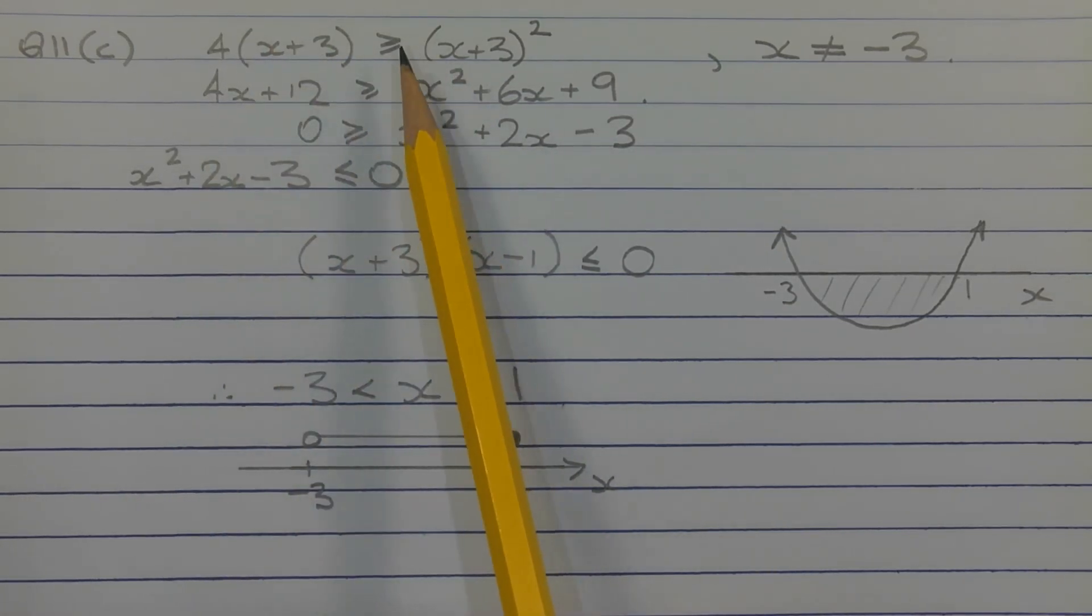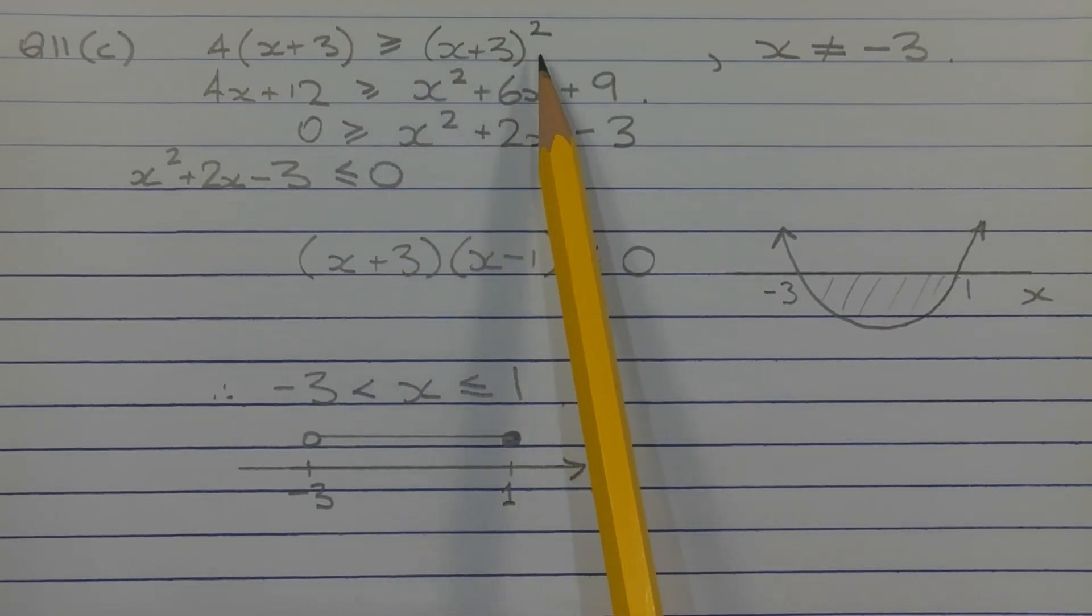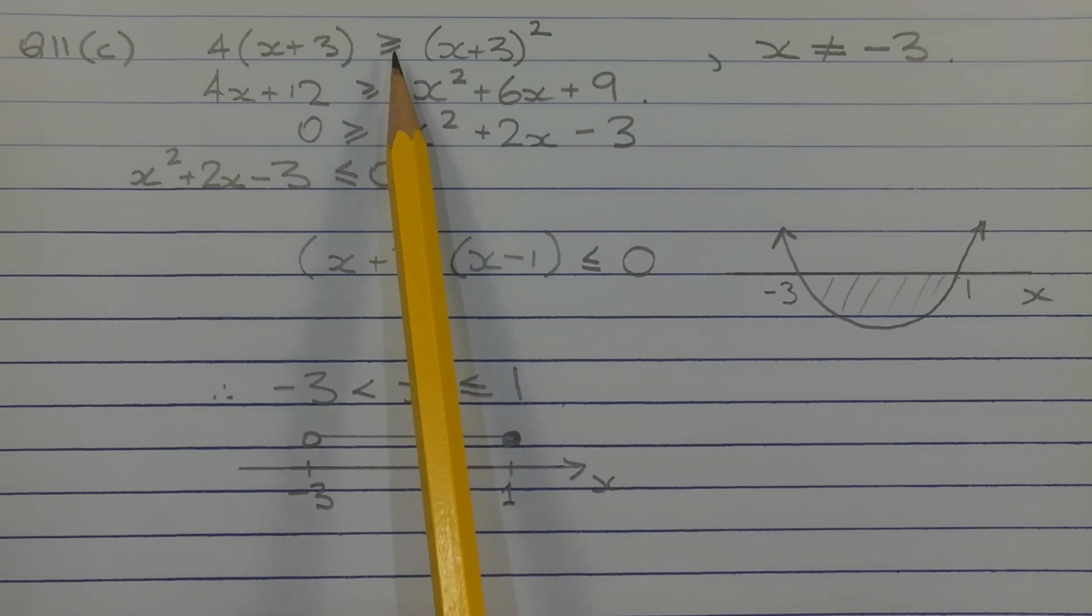greater than or equal to (x plus 3) squared. Notice that the inequality symbol has not switched around because we're multiplying by the square of the denominator, which will be greater than zero—in other words, positive.